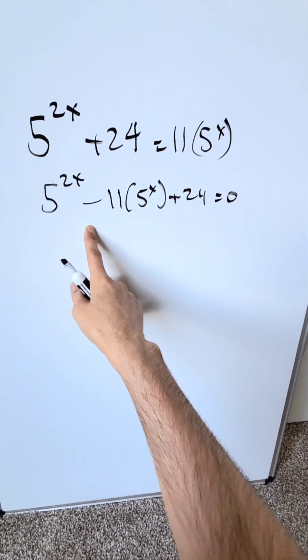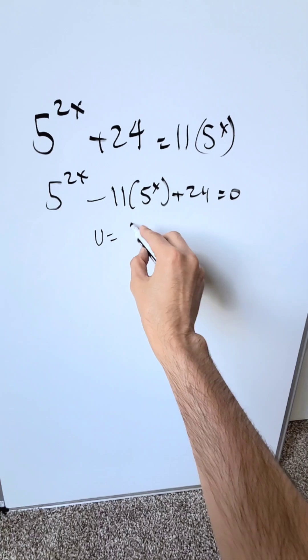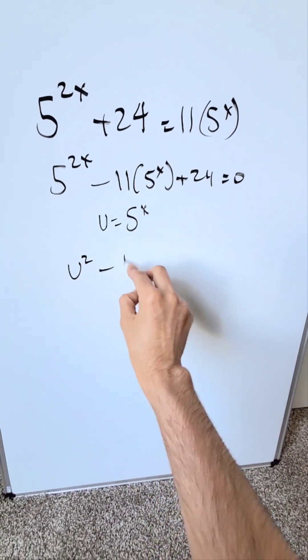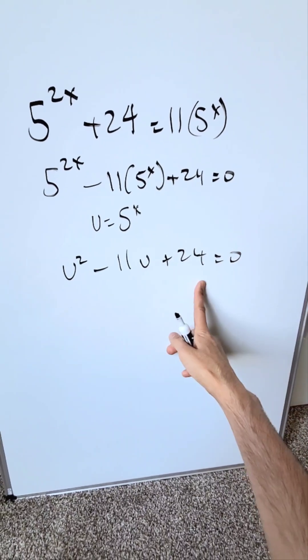It looks kind of like a quadratic style of equation, and it can if you look at a substitution: u is equal to 5 to the power of x. And now I'm looking at u squared minus 11u plus 24 is equal to 0, and now it makes sense.